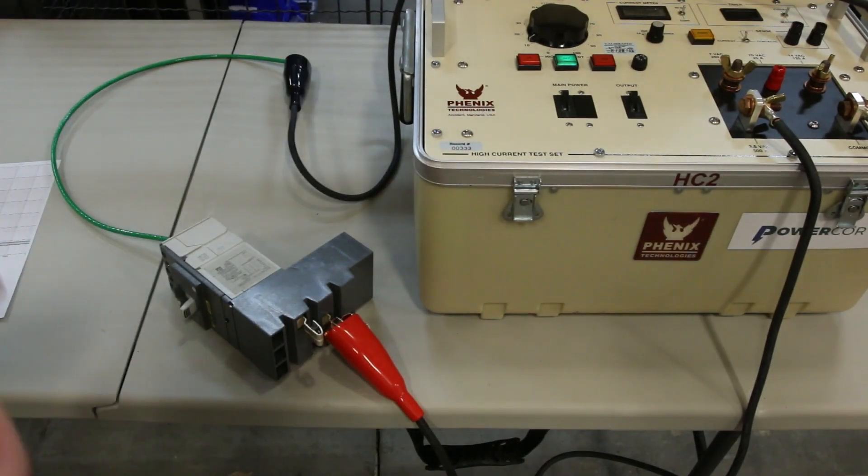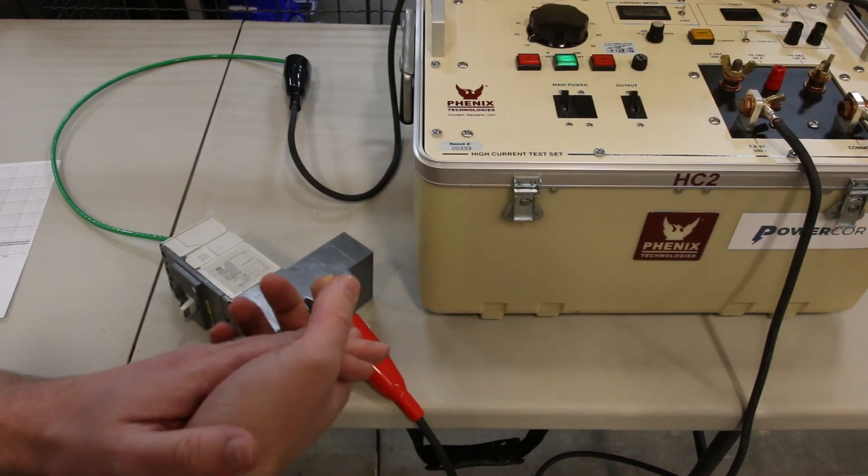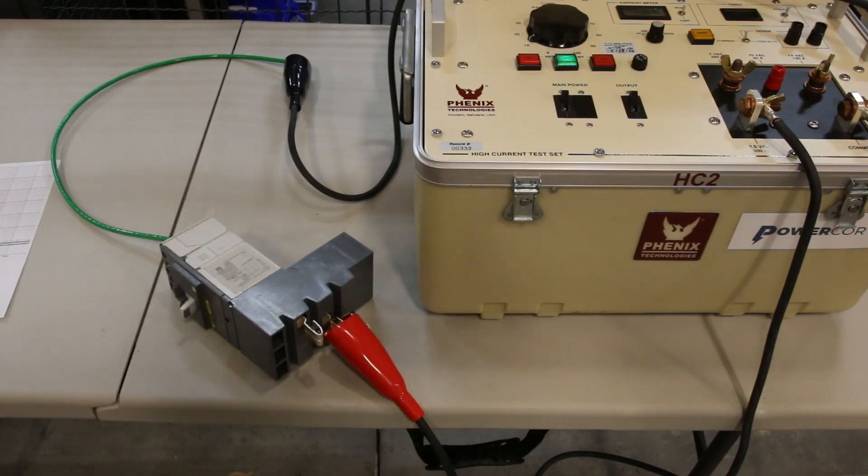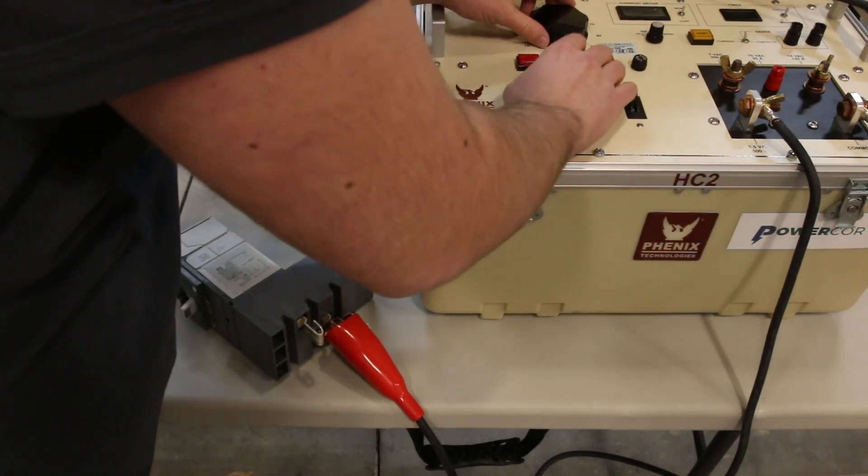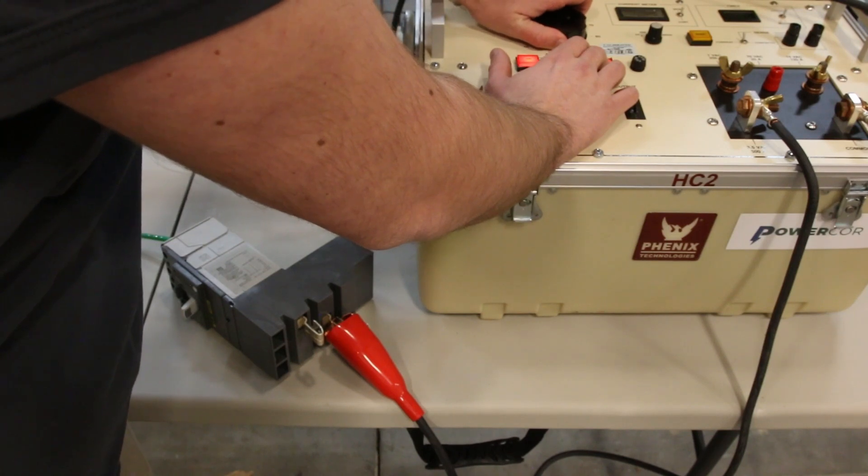I'm going to run this at 30 amps with everything nice and tight, as good as I can get it. I want to get sort of a baseline with the thermal camera here to see where we're at with our heat on the terminals and across the breaker, just running it for a few minutes with a decent amount of load through there, but obviously not tripping the breaker.